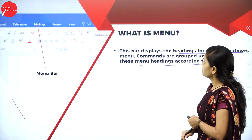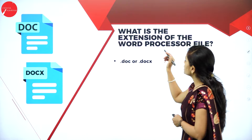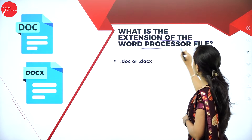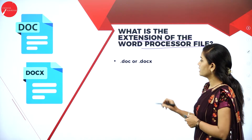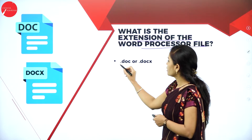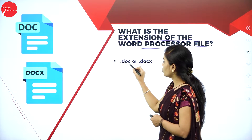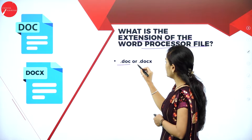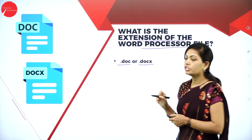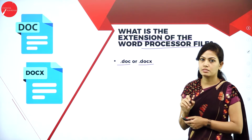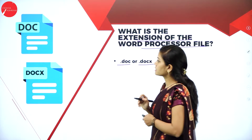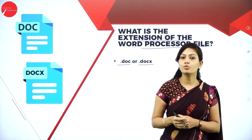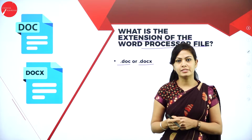Next, what is the extension of a word processor file? That is dot doc — file name dot doc — or file name dot docx (document x). So this is your file extension in a word document.